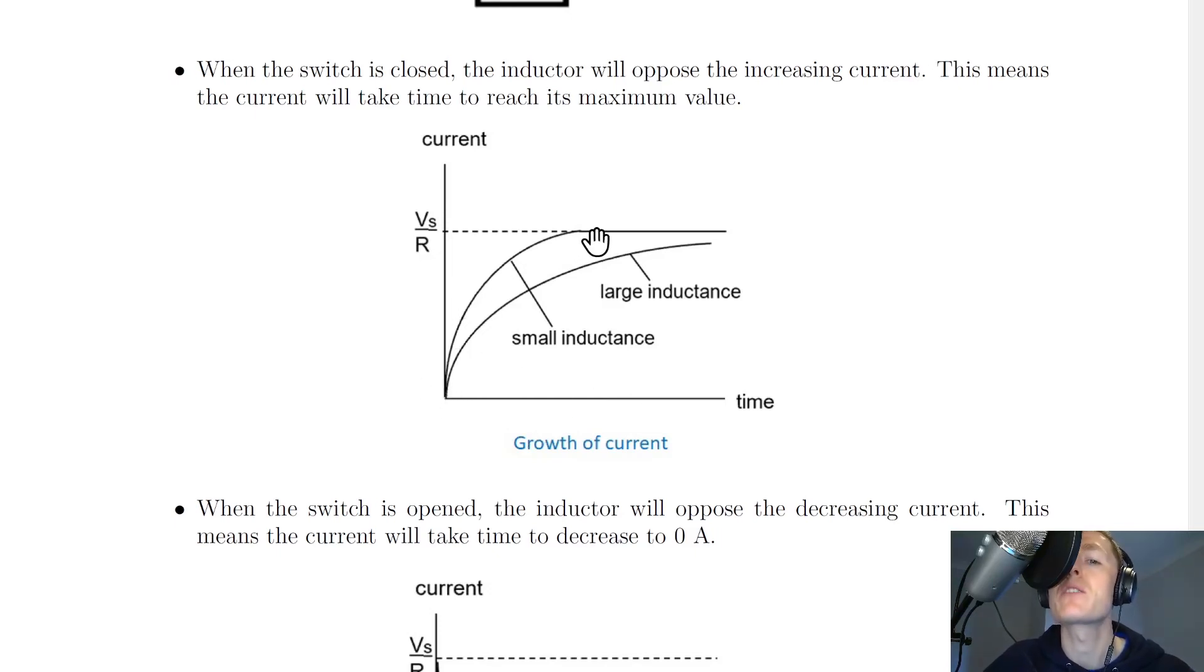and will increase up to a maximum value, which we could find using Imax equals Vs over R, i.e. this is just the Ohm's law equation V equals IR rearranged for the current I to get Vs over R, where Vs is the supply voltage of 1.5 volts, and R the resistance of the resistor.